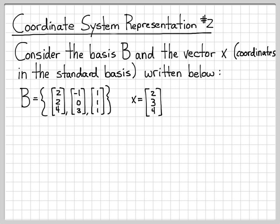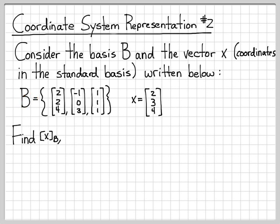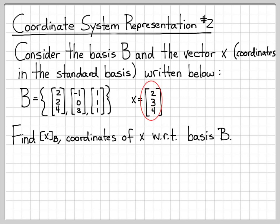What we're going to do in this problem is go the other direction. In the previous example, we had a vector x sub b written with respect to the basis b, and we figured out how to write it in terms of the standard basis. In this problem, we're going to start off with a vector written with respect to the standard basis, and we're going to figure out how to write its coordinates with respect to the basis b. The question is: how can I write 2, 3, 4 as a linear combination of these basis vectors?